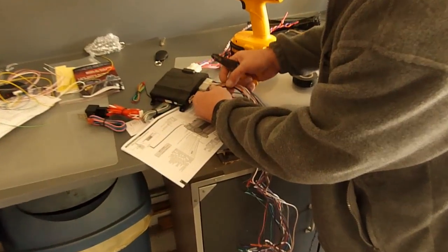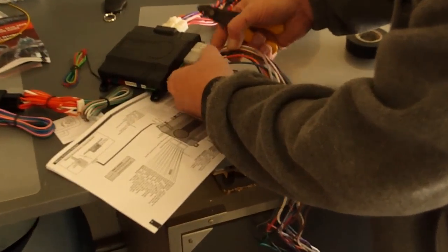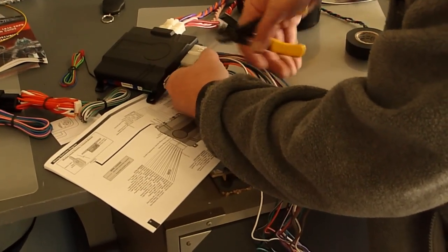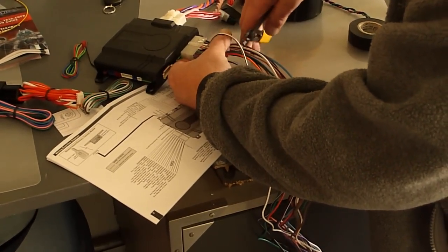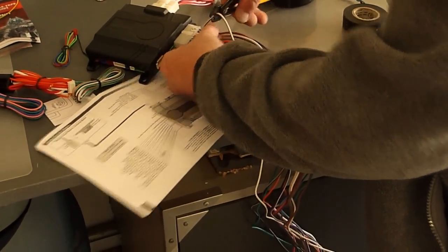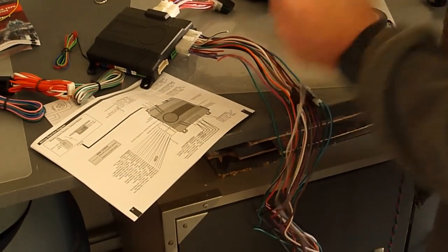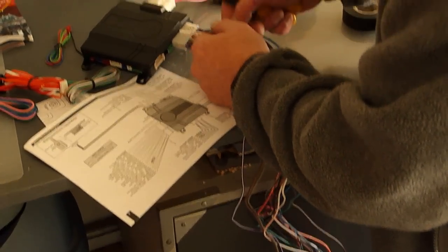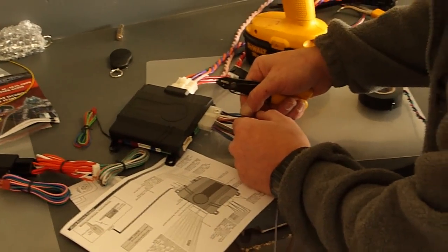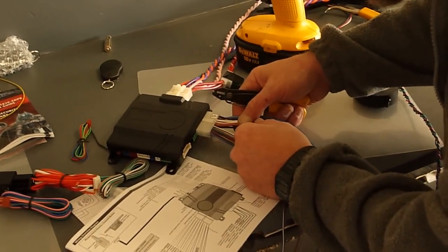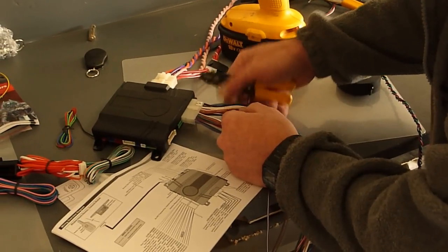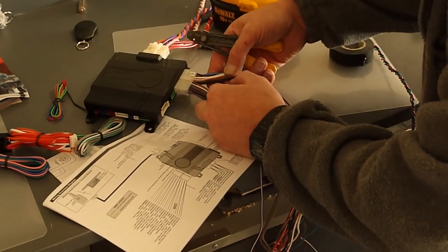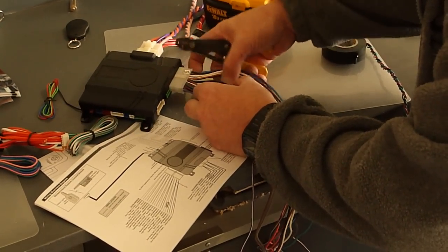That's the starter kill, white black, flasher white output negative, we're using positive, cut it, get rid of that. Brown, my eyes aren't so good anymore. Brown red brake input we need. Black white neutral safety input, we need that.